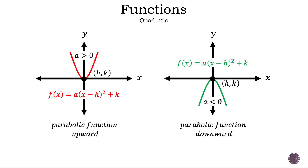Now, let's see what our graphs will look like when a is positive or negative. If a is positive, then our graph opens upward, like the one on the left. And if a is negative, our graph opens downward, like the one on the right.